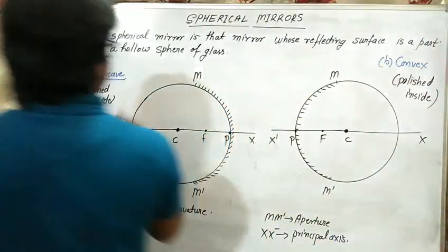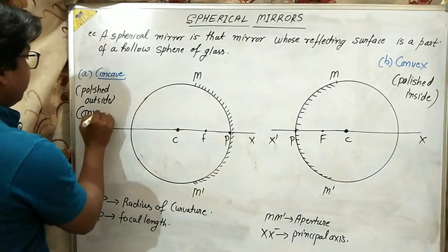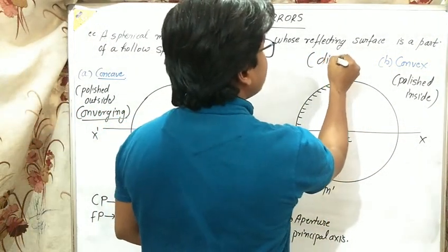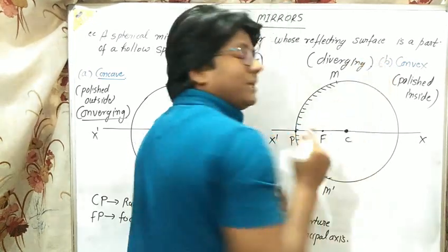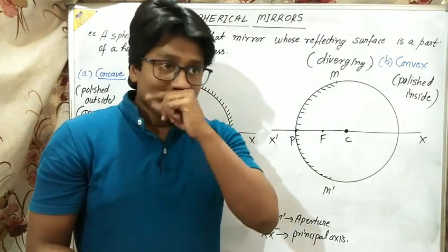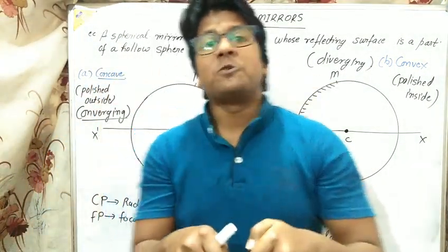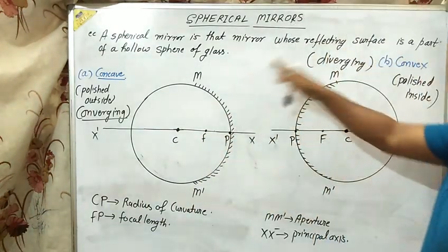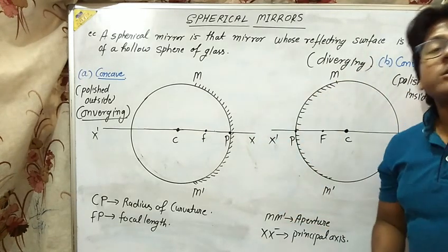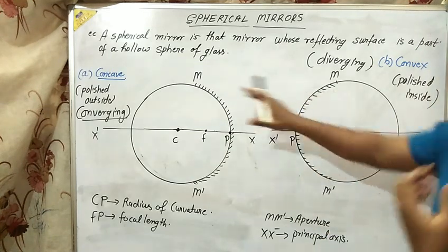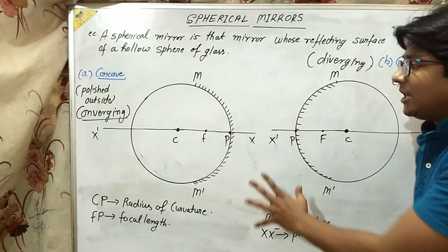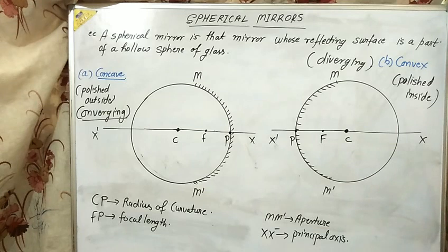Concave mirror is also called the converging mirror, and convex mirror is the diverging mirror. Now we will discuss the important terms and measurements related to spherical mirrors.